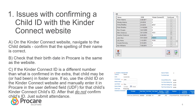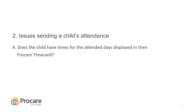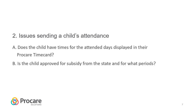If more than one ID number is listed, normally the larger number is the correct one, but you may need to verify that with KinderConnect directly. After resolving the ID, do not re-confirm the child's ID — just submit attendance. After confirming a child's KinderConnect ID, most remaining problems fall into two categories: whether the child has complete entries for the attended days in their ProCare time card, and whether the child is approved for subsidy from the state and for what periods.